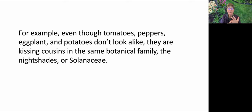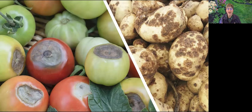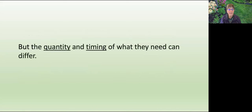Even though tomatoes, peppers, eggplant, and potatoes don't look alike, they are kissing cousins in the same family — the nightshades, or the Solanaceae family. Tomatoes are prone to diseases like blossom end rot and mosaic virus. Potatoes, on the other hand, can suffer from potato scab and potato nematodes. Both tomatoes and potatoes need nutrients like nitrogen, phosphorus, potassium, and calcium — but the quantity and timing of what they need can differ.